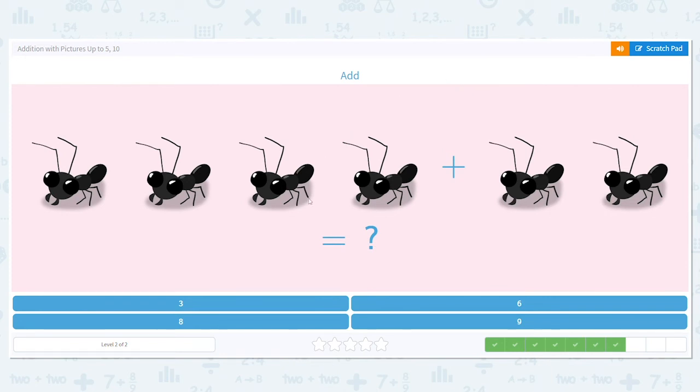My answer, my sum will either be 3, 6, 9, or 8. So we have 4, 5, 6. So 4 plus 2 is 6. Good job.